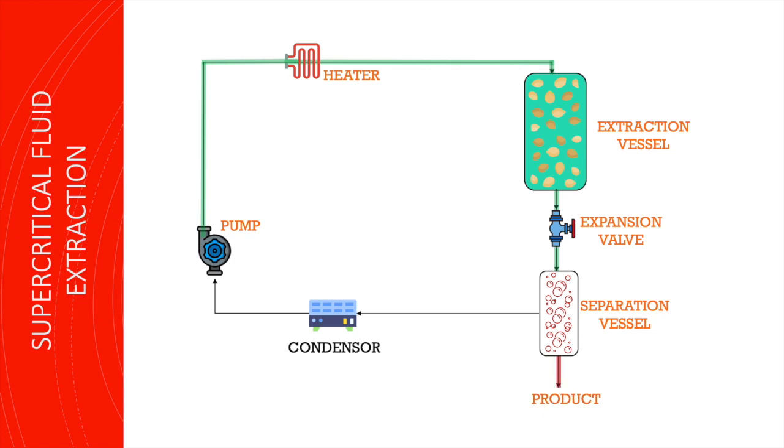Seventh step, the carbon dioxide exits the separator and goes through a condenser where it becomes liquid and is recycled back to the start of the process.